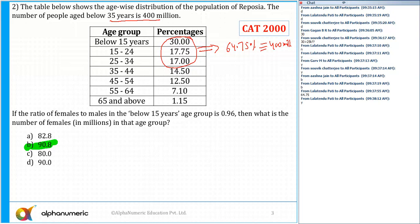The question is, if the ratio of female to male in the below 15 years age group is 0.96, which is basically 96 by 100...